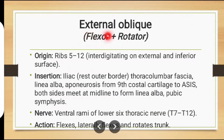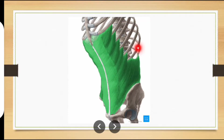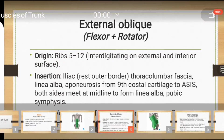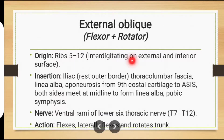The second flexor muscle is external oblique muscle. The muscle in green is external oblique muscle. Its origin is from ribs 5th to 12th, interdigitating on the external and inferior surface.